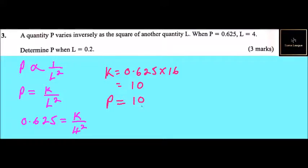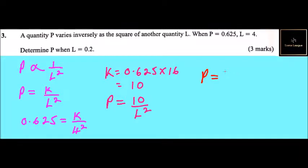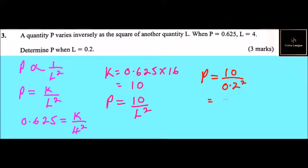So the equation connecting p and l is p equals to 10 divided by l squared. Now we have the equation. When l is equals to 0.2, we can get p equals to 10 divided by 0.2 squared, which is 0.04.